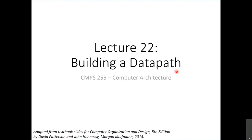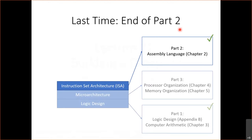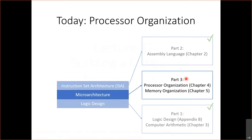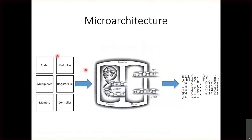Hello everyone, and welcome to lecture 22 of computer architecture. Today we're going to talk about building a data path. Last time we ended part two of the course. In part one, we spoke about logic design — how we can put together different logic gates to build circuits that can do basic operations. In part two, we looked at the language the computer understands: instructions, and how we can program a computer using them. Today we start part three, microarchitecture, the layer that connects these two. We'll take the building blocks from part one and put them together to build a processor that can execute the instructions from part two.